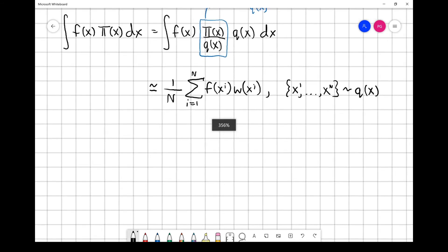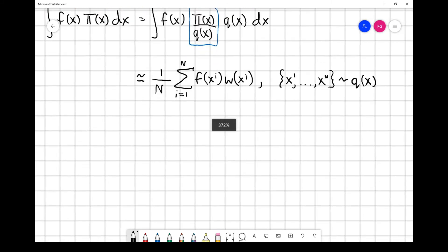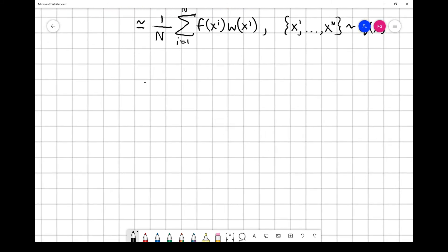As I'm sure you could probably work out, it helps if Q is similar to π. If we have a one-dimensional example, so this is X, and we've got our target distribution that's something a bit weird, that is π, then it helps if our proposal, let's say it's Gaussian so it's easy to sample from, is something similar.